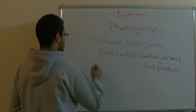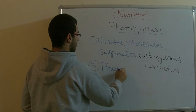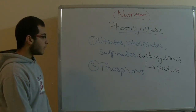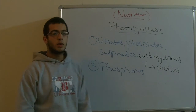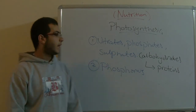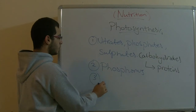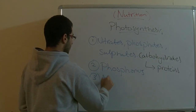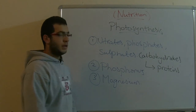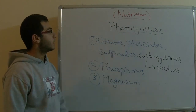The second thing in the salts is phosphorus. Phosphorus is important in the formation of the molecules that carry the hydrogen during the formation of the carbohydrates. The third thing is magnesium, and it is important in the formation of the chlorophyll. As we all know, chlorophyll is very important in the photosynthesis process.